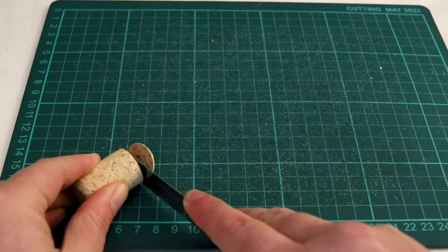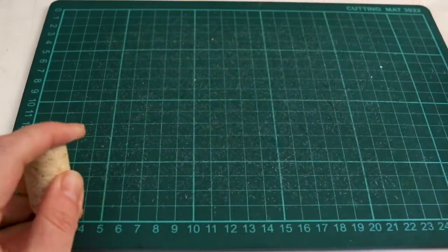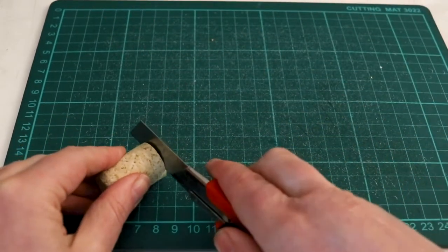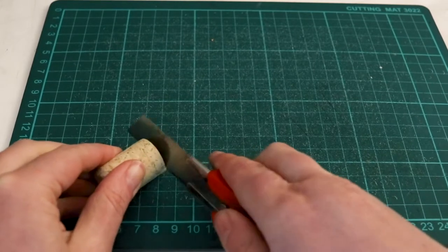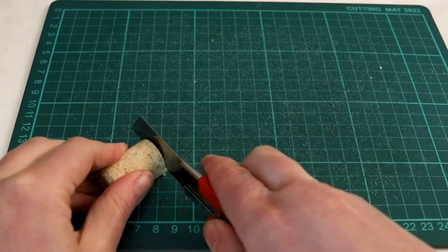This is a pretty basic project that uses pretty basic tools. I've got my cutting mat, my utility knife with a very sharp blade and a sharpie, and that's pretty much all you will need for the carving part.